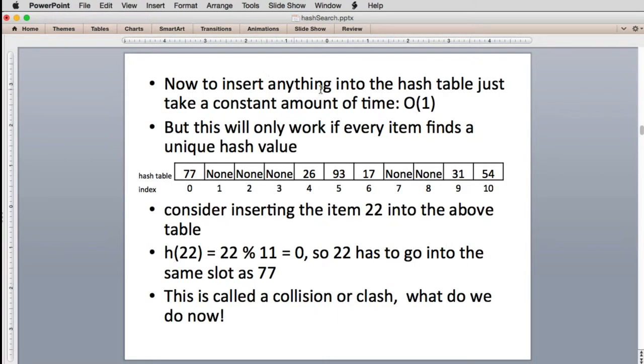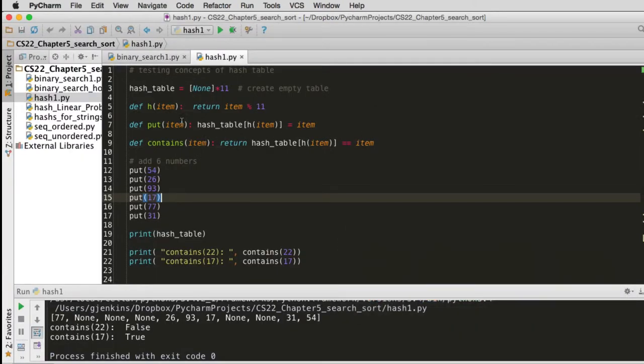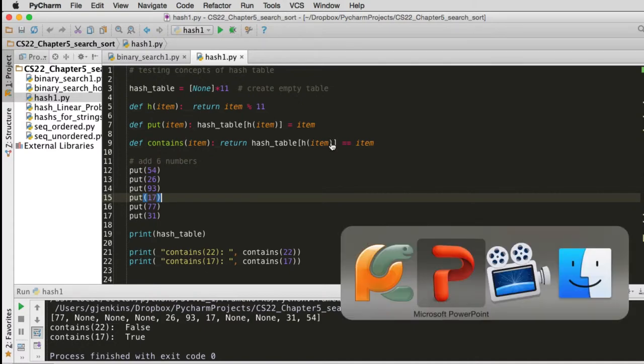Now to insert anything in the hash table takes a constant amount of time. Because all we have to do, you go look at the code again, you can see to insert, we just do one modulus operation here. So we call this function and do a modulus. And then we look, we have the index and we just store it in the table. So there's only two steps basically, do the modulus and store it in the table. And it's the same for accessing the table. We just do the modulus, calling this function, and we look it up in the table. So very fast.